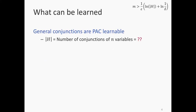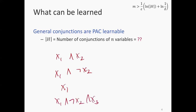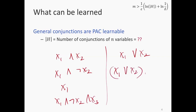A conjunction, just to remind you, is something like x1 AND x2 — the output is true if both x1 and x2 are true. x1 AND NOT x2 is also a conjunction: the output is true if x1 is true and x2 is false. x1 by itself is a conjunction with just one element, or you can have x1 AND NOT x2 AND x3 and so on. Things that are NOT conjunctions include x1 OR x2 — that says the output is true if either x1 or x2 is true — or x1 OR x2 AND x3.